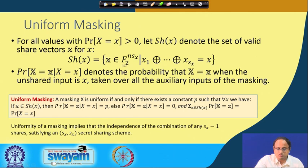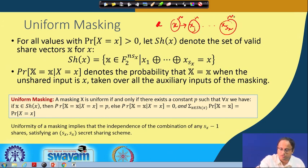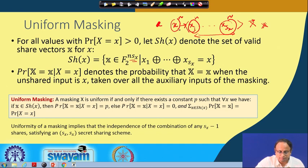There are certain important criteria which the threshold implementation should satisfy. One of the most fundamental properties is what is called uniformity of masking. For all legitimate values of the input x, we define SH(x) to be the set of valid shared vectors, represented as the vector x-hat. The shared x consists of those shares; each x is an n-bit value, so every share is also an n-bit value. Therefore the total size is n times S_x, and the XOR of all components gives back the original data x.